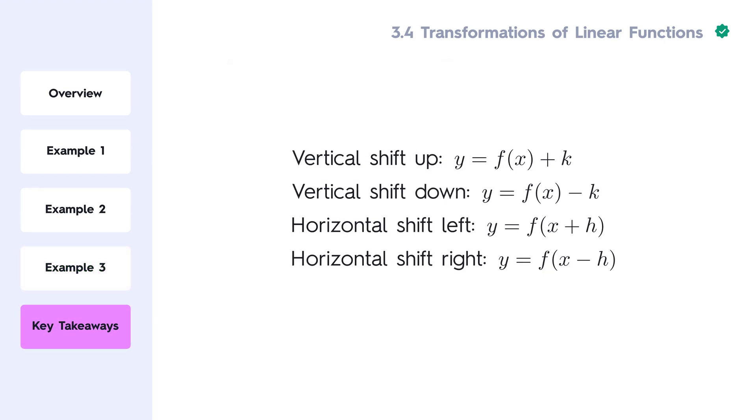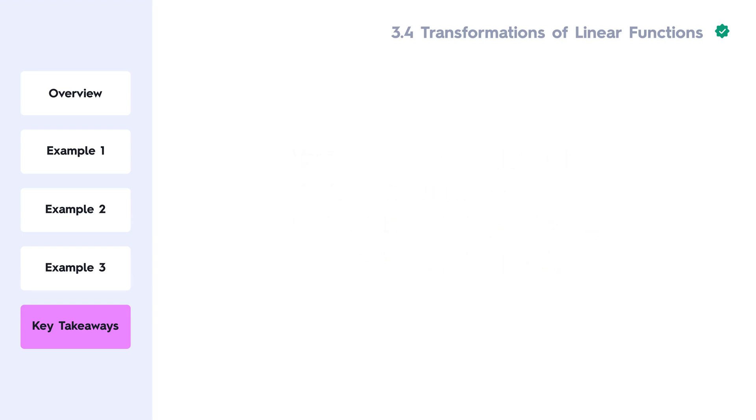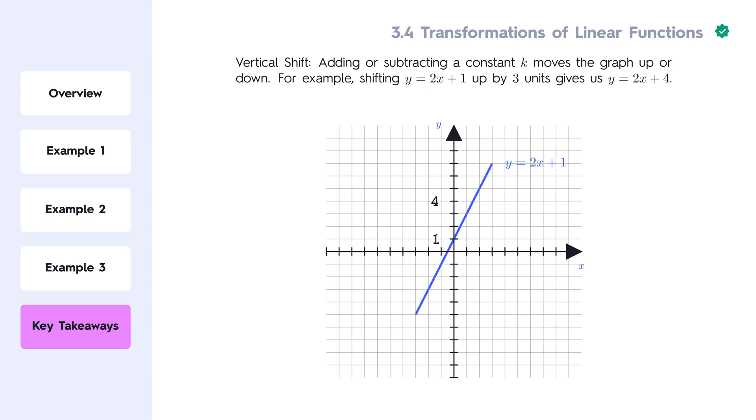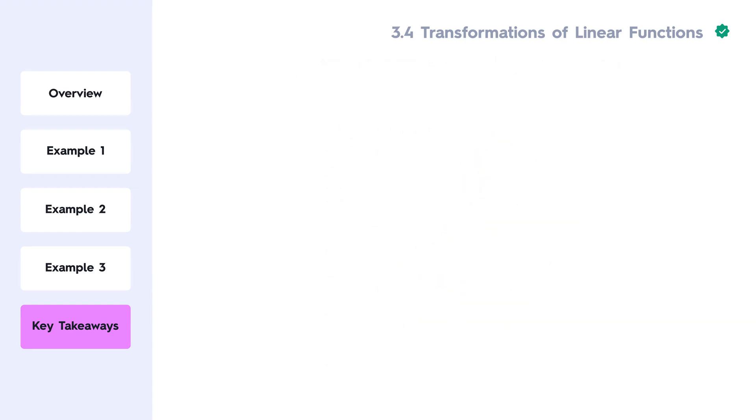We learned that shifting a linear function involves moving the graph either up, down, left, or right. Vertical shift involves adding or subtracting a constant k which moves the graph up or down. For example, shifting y equals 2x plus 1 up by 3 units gives us y equals 2x plus 4.